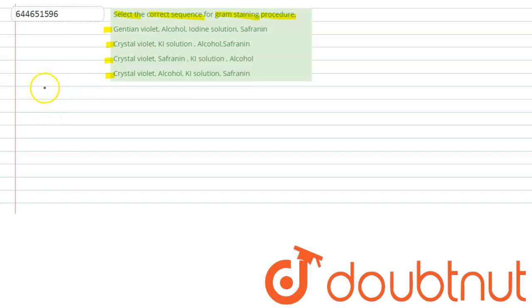In gram staining the smear is first of all treated with crystal violet. Crystal violet is a primary stain.